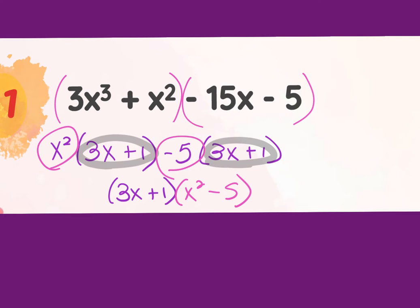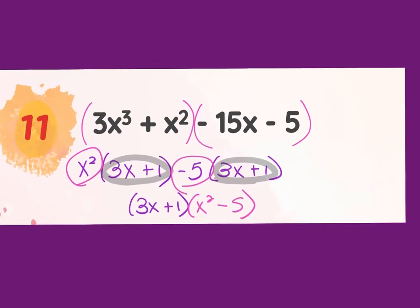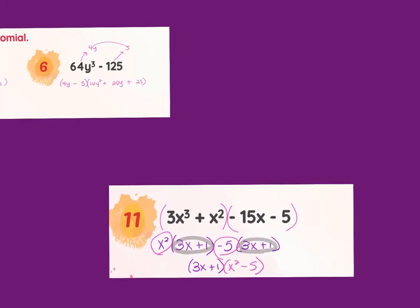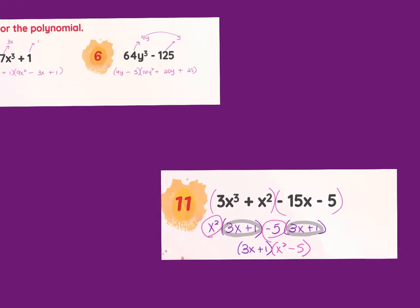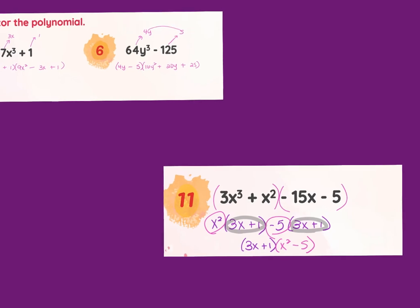We check that second set of parentheses because eventually these will compound with more than one factoring step in one problem. If it were a difference of two squares, we'd continue factoring. It is a difference, and x² is a perfect square, but 5 is not, so we can't keep going. If it were x² minus 25, we'd break that down to (x + 5)(x − 5).